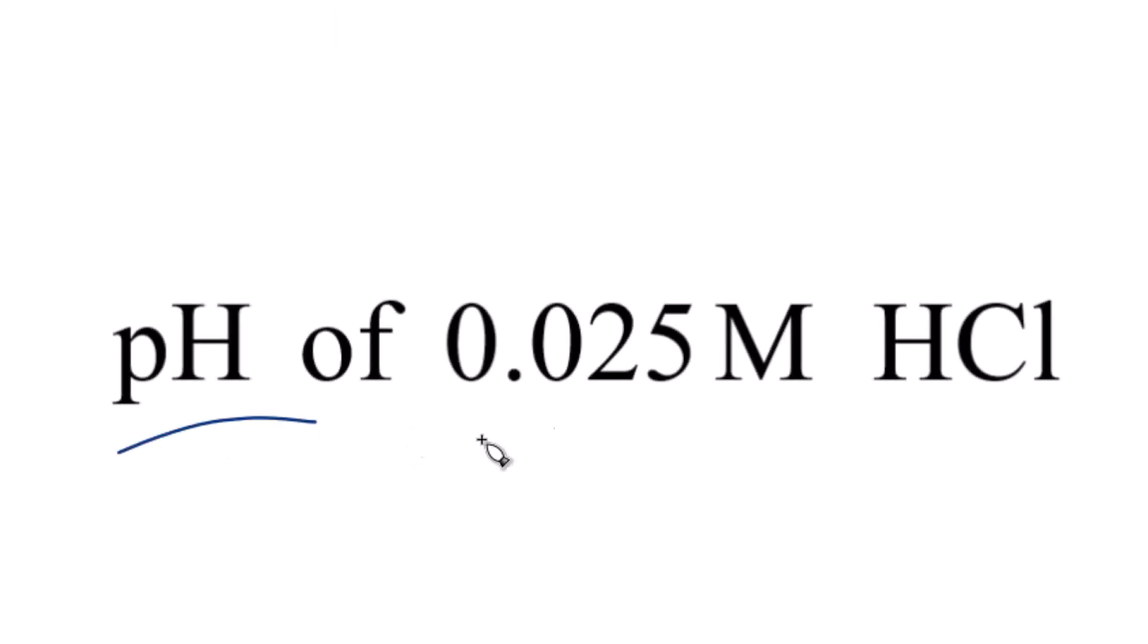If you need to find the pH of a 0.025 molar solution of HCl, that's hydrochloric acid, here's how you do it.